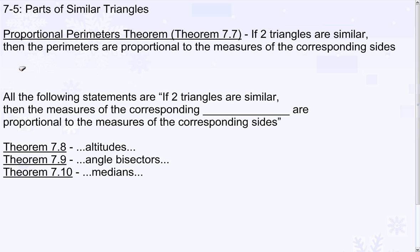If we know that two triangles are similar, then their perimeters are proportional in the same measure as the scale factor of the corresponding sides.